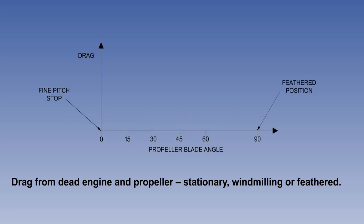The drag from the propeller itself will depend on whether it is stationary, windmilling, or feathered, but there will always be some contribution to the yawing moment. If the propeller is stationary, it is generating some drag from the blades, which could be at a relatively large angle to the airflow, but no torque.